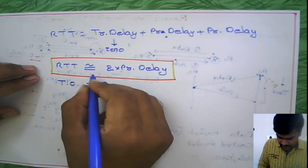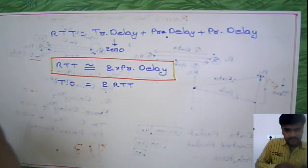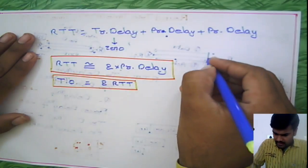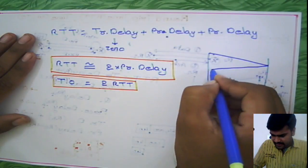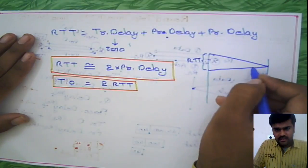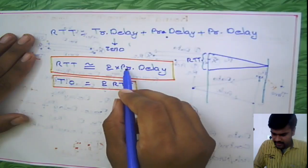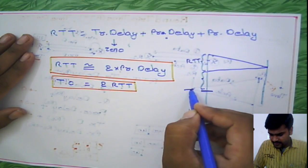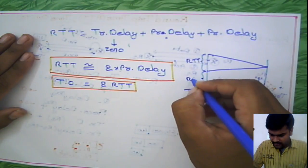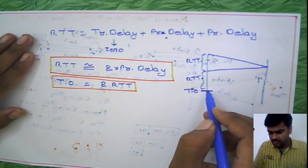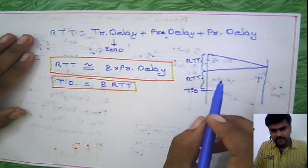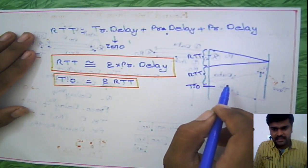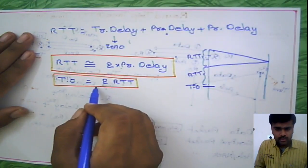Timeout is simply defined as double the round trip time. As we have seen, the round trip time is the propagation delay after eliminating all other delays. We are making timeout equal to 2 times the round trip time. If you don't get any acknowledgement, you will retransmit the same packet. There are different situations where a timeout will occur, which will be clear in the next session. For now, timeout equals 2 times the round trip time.